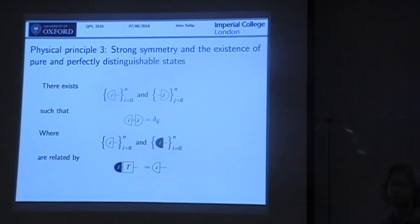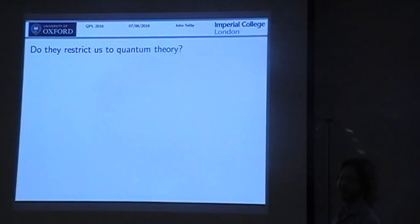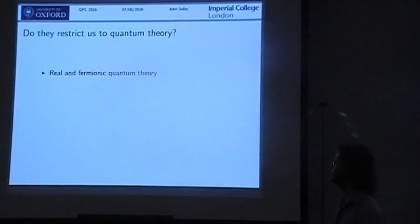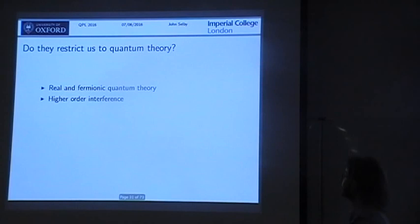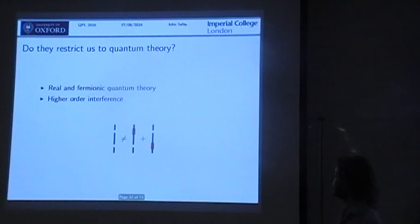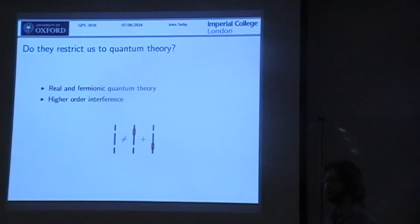As we heard in the previous talk, real and pholomonic quantum theory both satisfy all of these axioms along with standard quantum theory, so we know there are other theories that satisfy these and we can start to explore other features of these theories. There's really no reason to think we should be limited to these examples — there's nothing that constrains the order of interference in these theories, at least not obviously. So what do I mean by higher-order interference? It becomes important later in the talk.